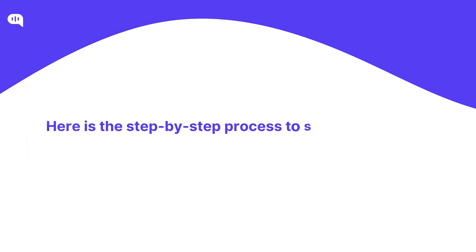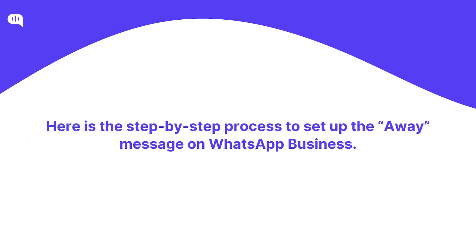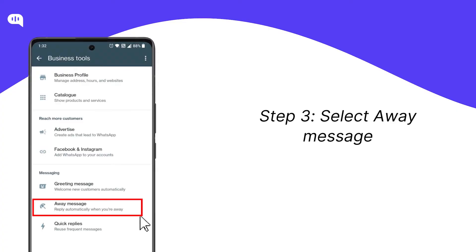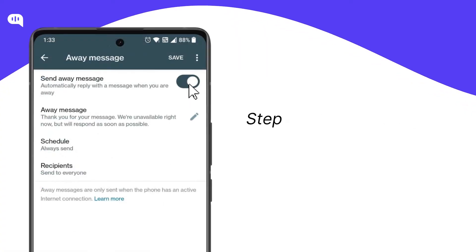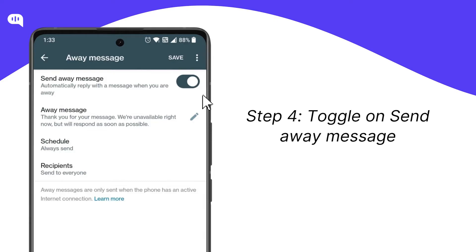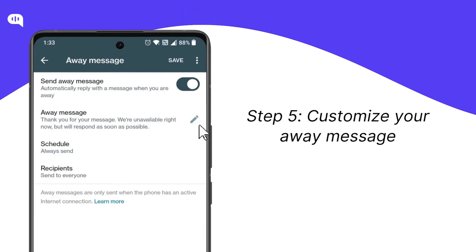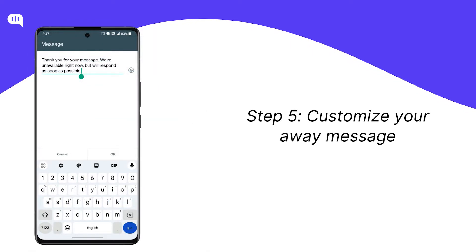Here is the step-by-step process to set up the Away Message on WhatsApp Business. In the Messaging section, select Away Message. In the next screen, toggle on the Send Away Message option. Customize your Away Message by tapping on the Edit Away Message option. Here, you can create a personalized message to inform your customers of your unavailability and provide alternative ways to connect.